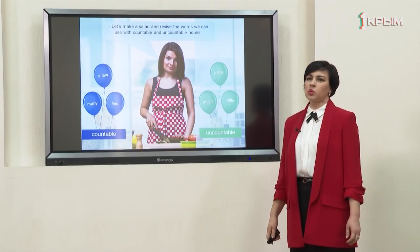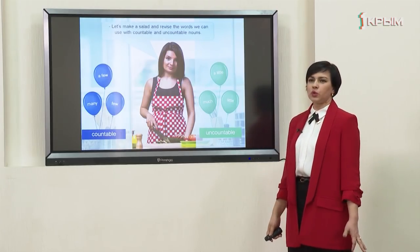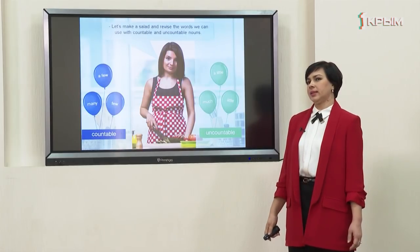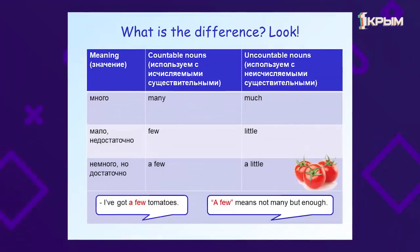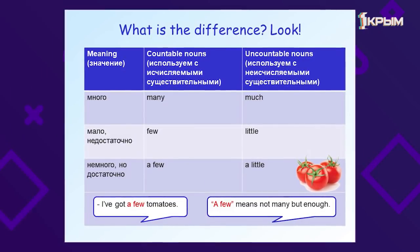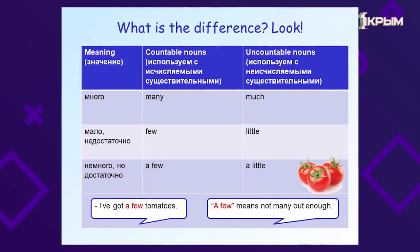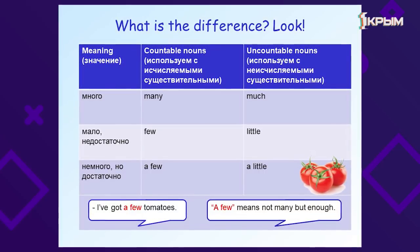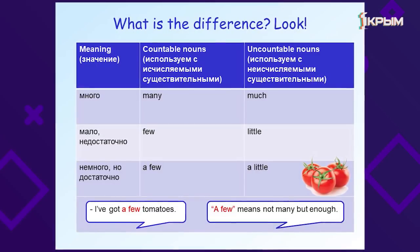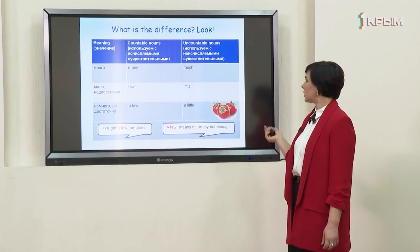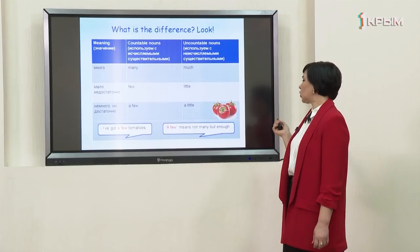Let's make a salad and revise the words we use with countable and uncountable nouns. We use many, a few, few with countable nouns, and much, a little, little with uncountable nouns. Look at the table: many we use with countable nouns and much we use with uncountable nouns. A few we use with countable nouns and a little we use with uncountable nouns. If we say 'I've got a few tomatoes' it means you have not many but enough for the salad.